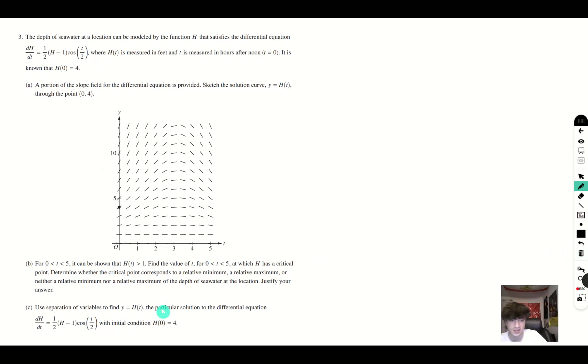Now let's take a look at part C. Use separation of variables to find y equals h of t, the particular solution to the differential equation with the initial condition h of zero is equal to four. So let's write out what we're given dh dt is equal to one half h minus one cosine t over two.